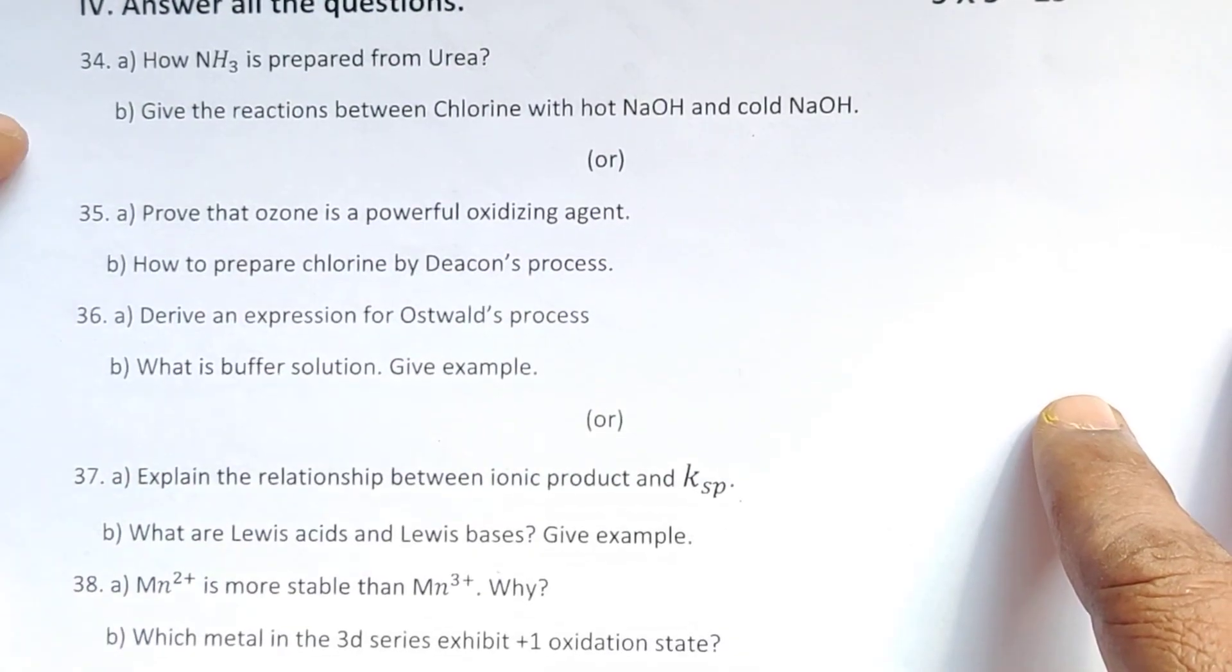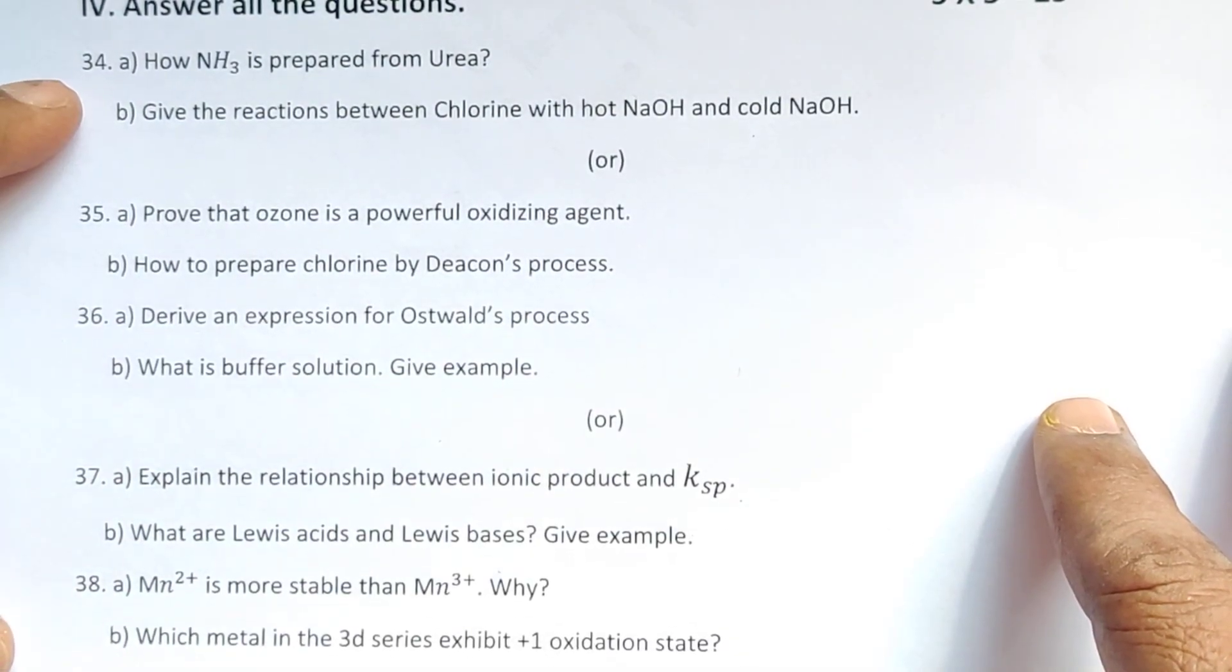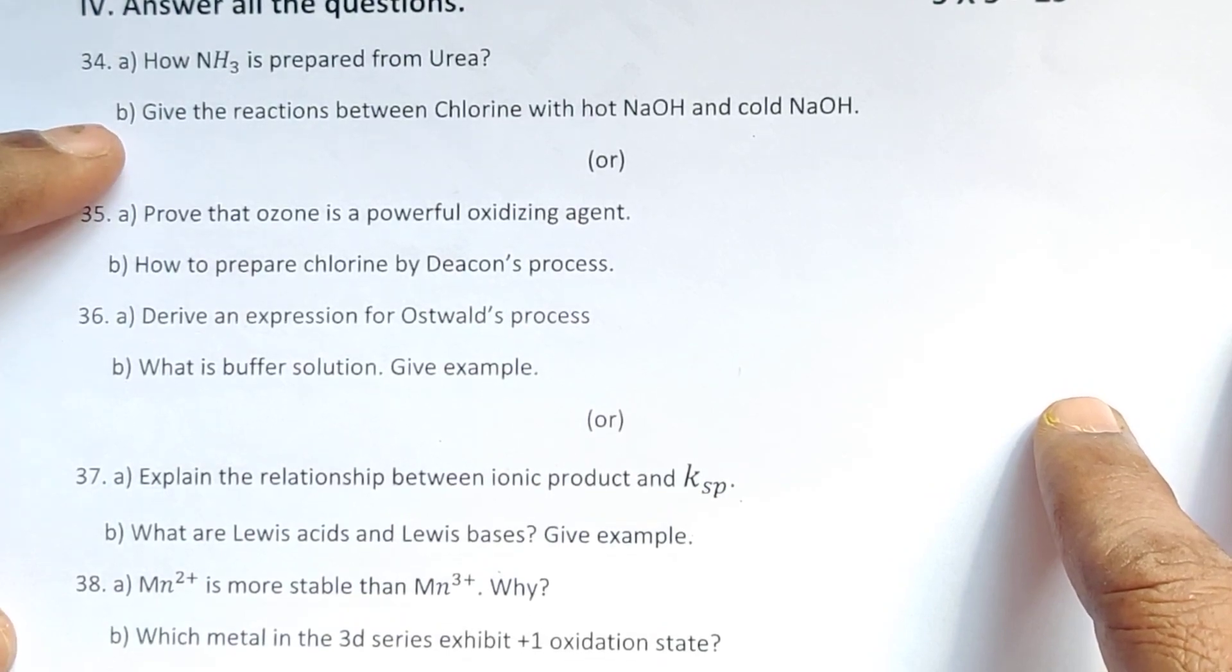Then, five mark questions. Thirty-four A: How is ammonia prepared from urea? B: Give the reactions between chlorine with hot NaOH and cold NaOH.